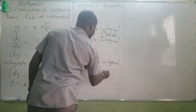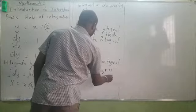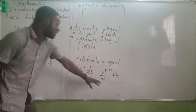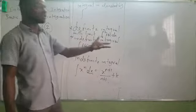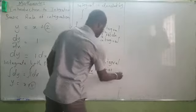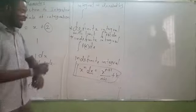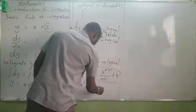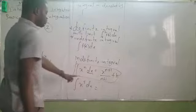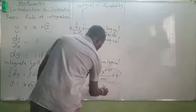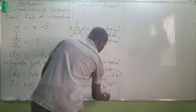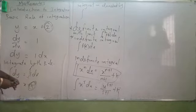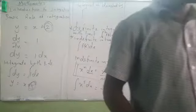The basic technique: the integral of x^n dx equals x^(n+1) divided by (n+1) plus k, where k is the constant of integration. For example, the integral of x^5 with respect to x equals x^(5+1) divided by (5+1) plus k, which gives x^6 divided by 6 plus k. Always include the constant k for indefinite integrals.